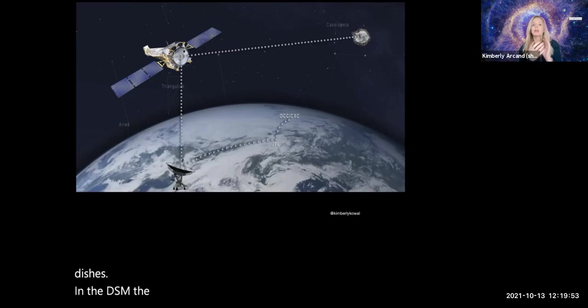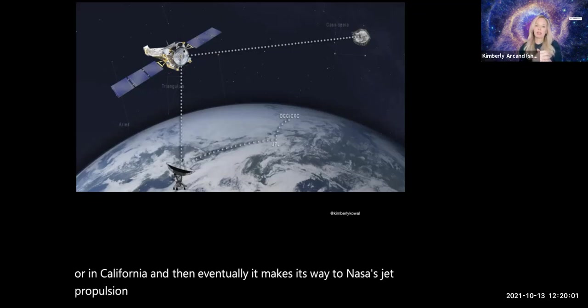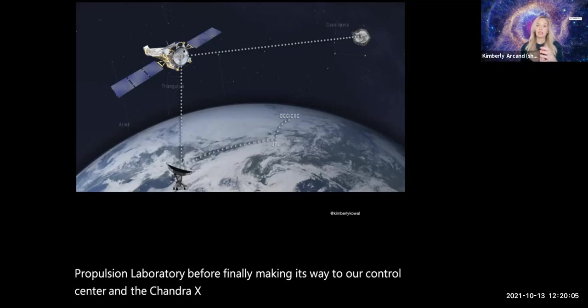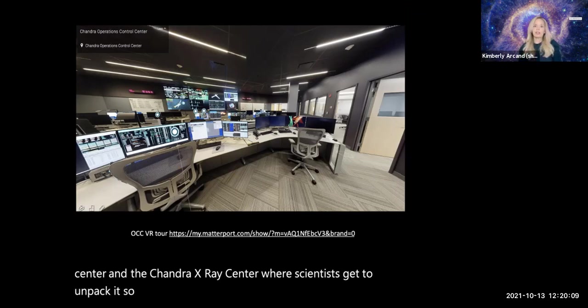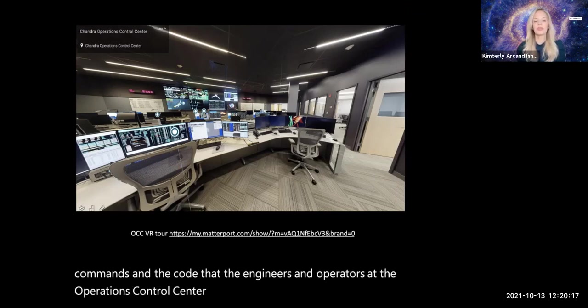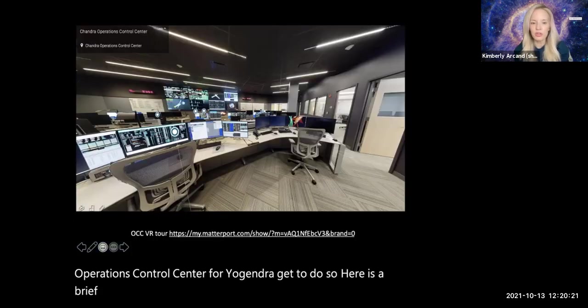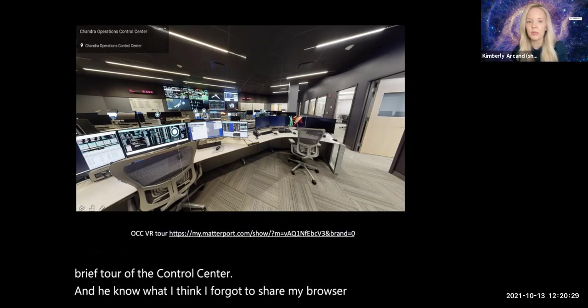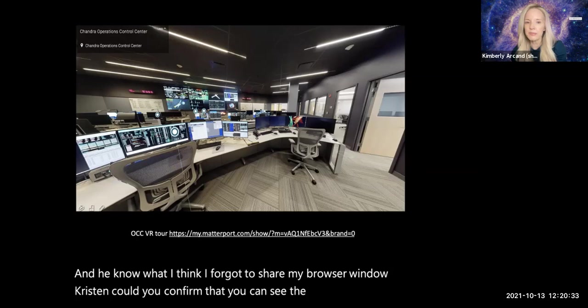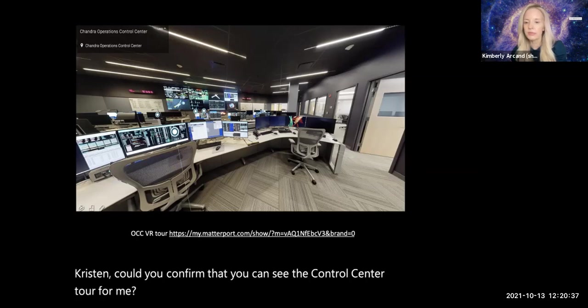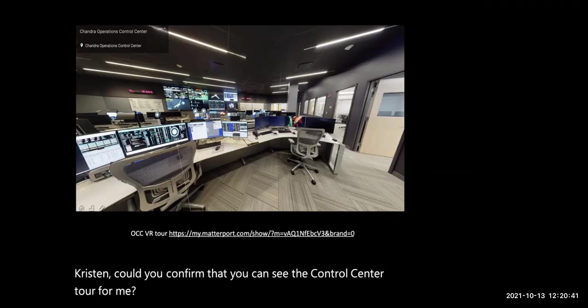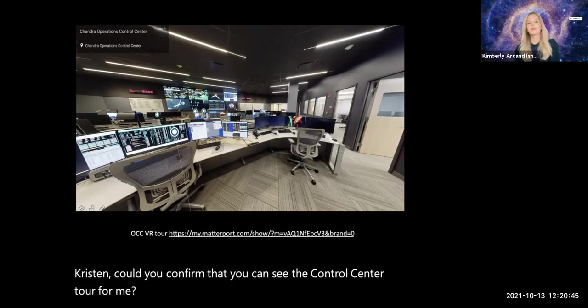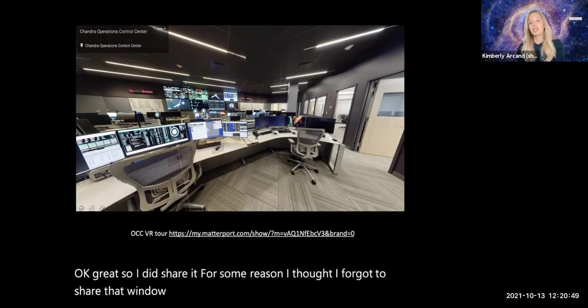That digital suitcase is then sent down on its way through NASA's Deep Space Network about every eight hours through one of the dishes in the DSN, either in Madrid, in Australia or in California. And then eventually it makes its way to our control center and the Chandra X-ray Center where scientists get to unpack it. So here is a brief tour of the control center. We are in Chandra's Operation Control Center. This is a restricted location during the pandemic, it became even more restricted.